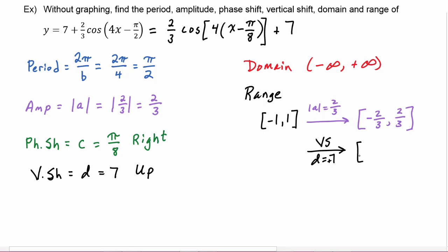So then that means if I'm at negative 2/3 and I go up by 7, then I'll be at 6 and 1/3. And if I'm at 2/3 and I go up by 7, then I will be at 7 and 2/3. So there is our range.